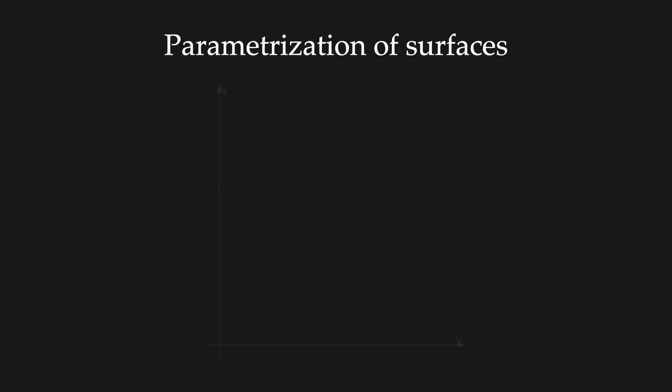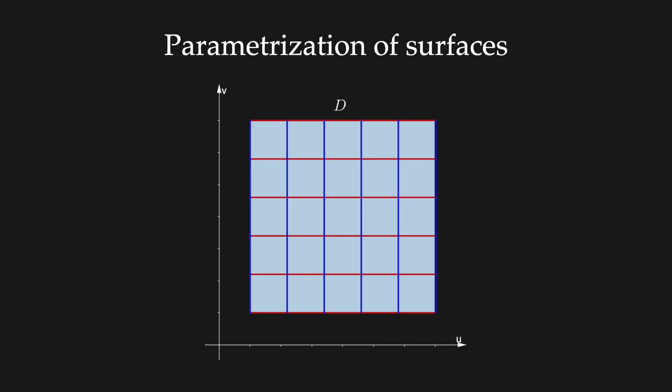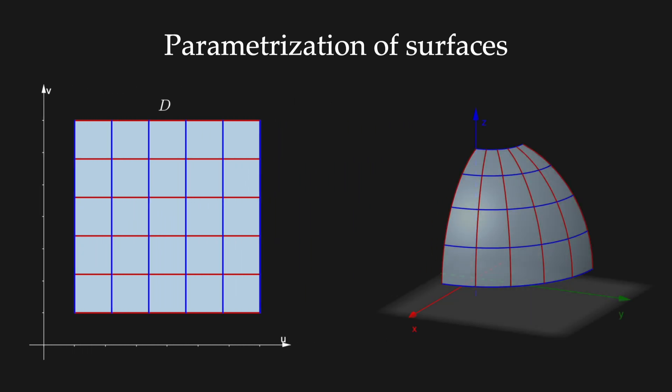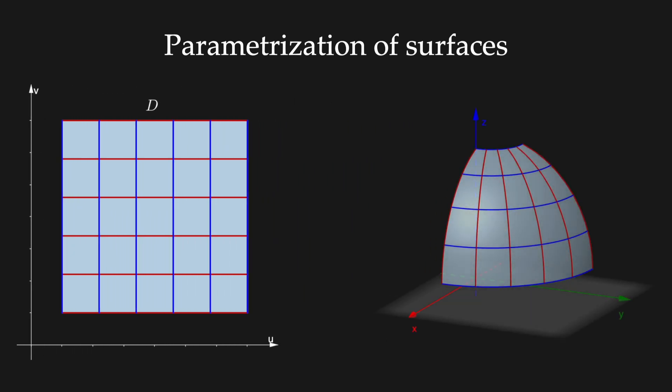Essentially we need to consider a cartesian plane with u v axis. Then the domain again will be a subset of the plane. We are going to obtain a surface based on this domain. So for every point with coordinates u comma v in the domain, there will correspond a point x y and z in the space.